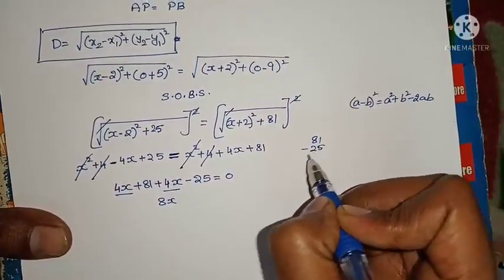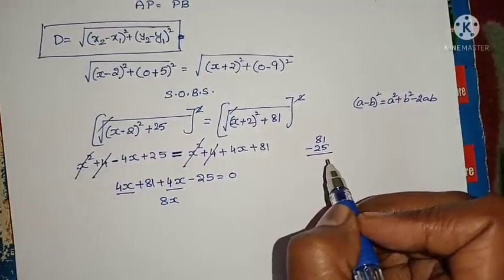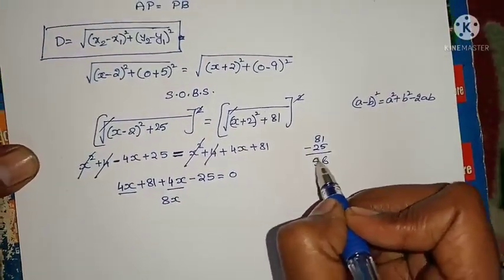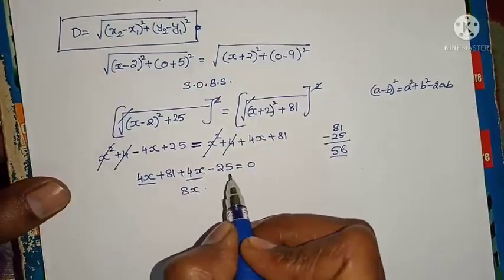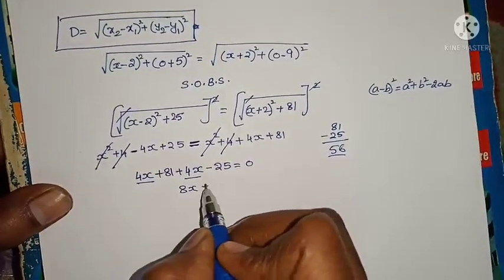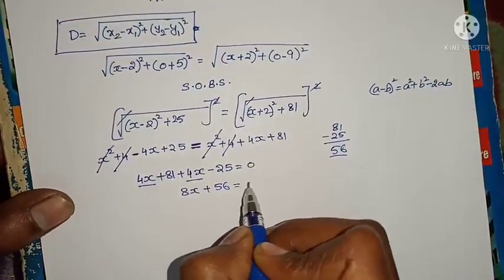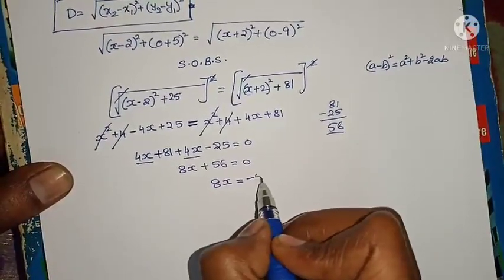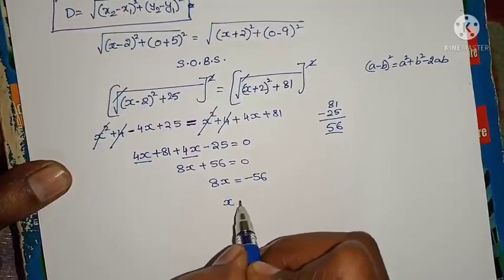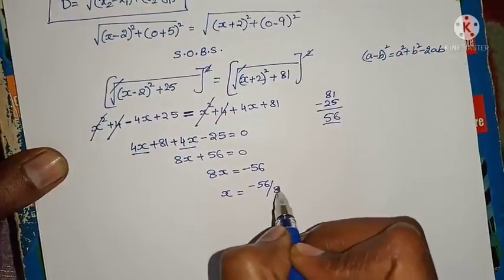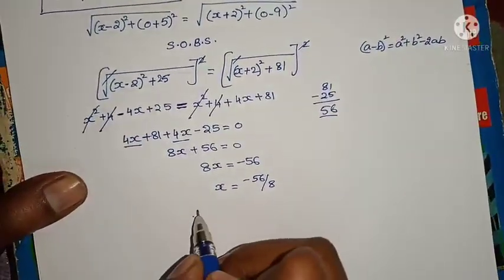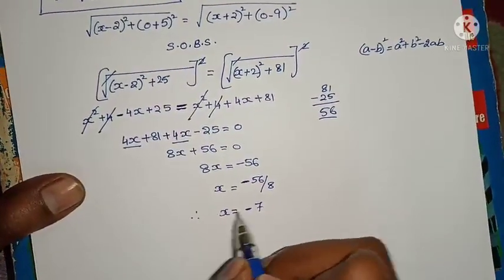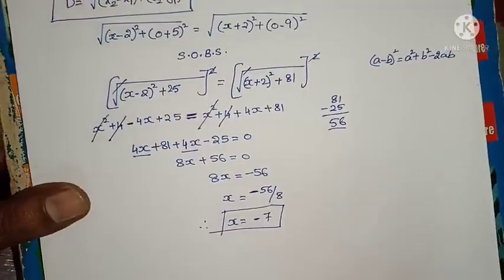81 minus 25 equals 56. So 8x plus 56 equals 0. Therefore 8x equals minus 56. x equals minus 56 by 8. 8 sevens are 56, so x equals minus 7. Our problem is over.